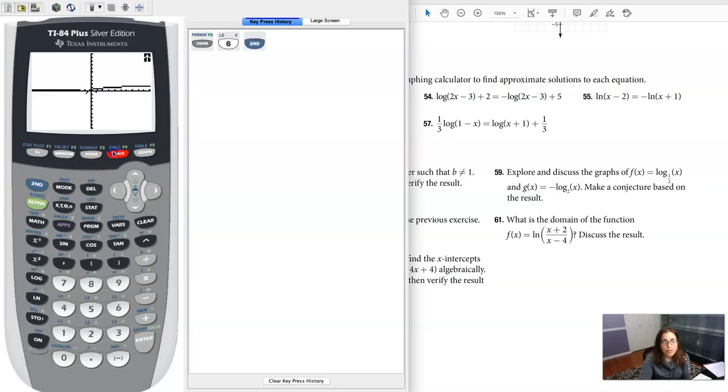So let's hit second trace, option 5, and I would like one of my curves to be that function, one-third log of 1 minus x, and I would like the other function to be log of x plus 1 plus one-third, so I hit enter, I'm gonna hit enter through guess, and then there's my answer.